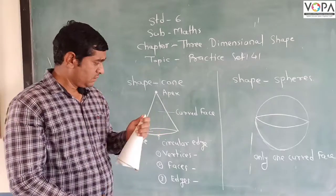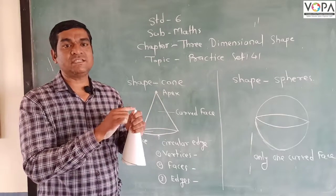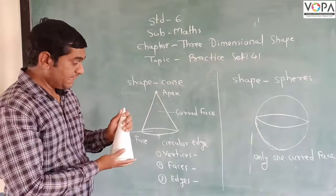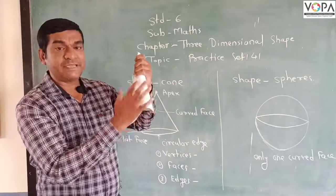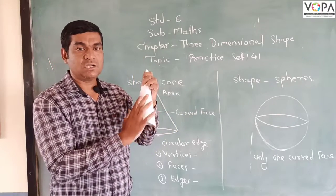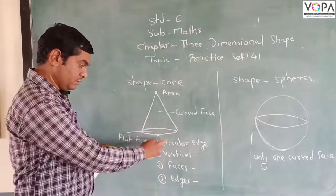So in this case, it is called as an apex. It is also called as a vertex. So the next point is the face. It is a curved face there. So it is called as a curved face and the edges.